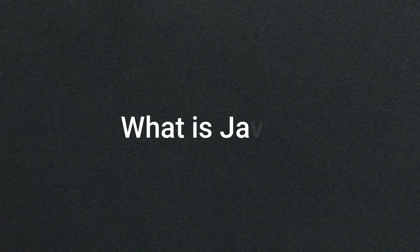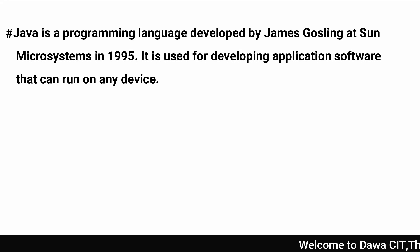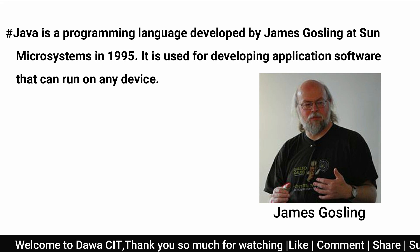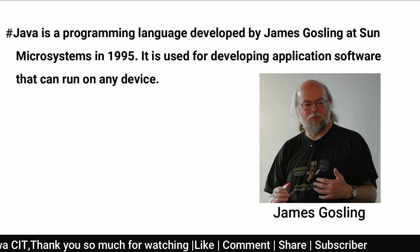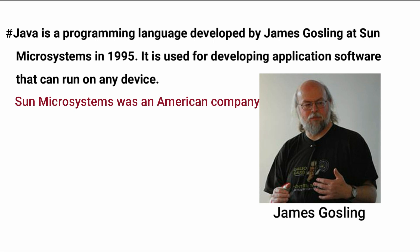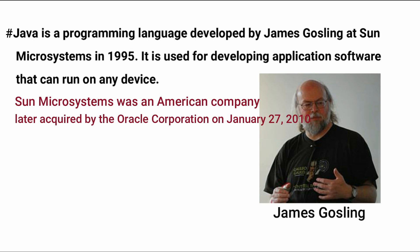So first we talk about what is Java. Java is a programming language developed by James Gosling at Sun Microsystems in the year 1995. Sun Microsystems was an American company where James Gosling and his team members worked together and developed the Java programming language, which was later acquired by Oracle Corporation on January 27, 2010.